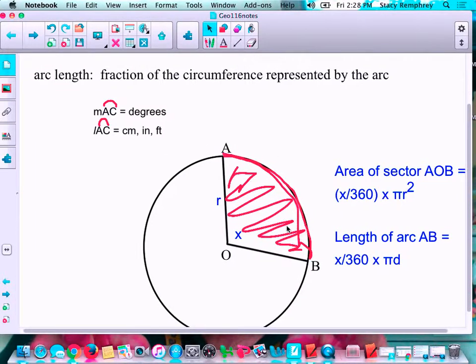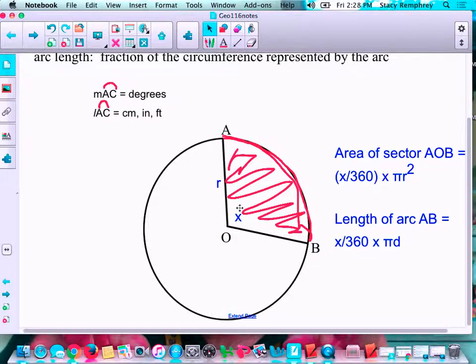Now, to get the area of the sector and the length of the arc, it's really not too bad. You're going to look at this central angle here, X, and think of that, what fraction is that of the whole circle of the 360? So you're going to take that number over 360 to give you the fraction of the circle, and then just multiply it by the area of the whole thing. For the length of the arc, again, you're going to find out what fraction of the circle is it, and multiply that by the circumference.